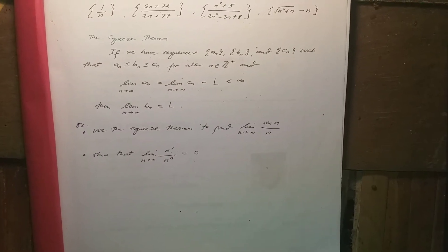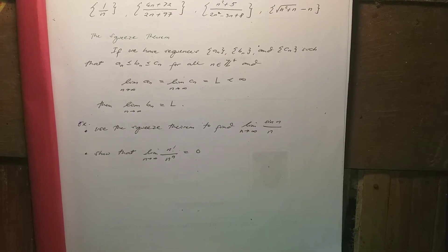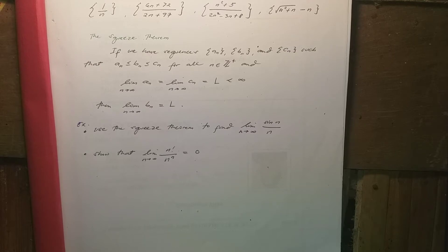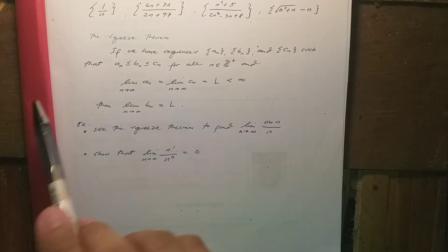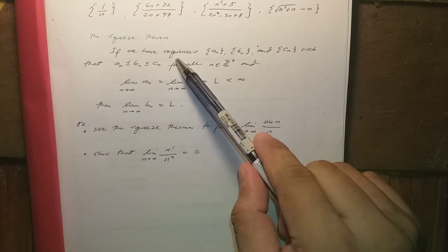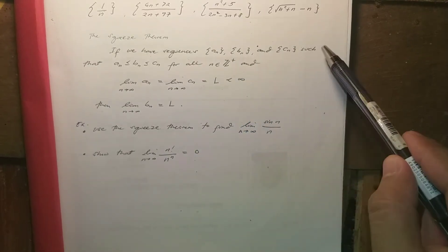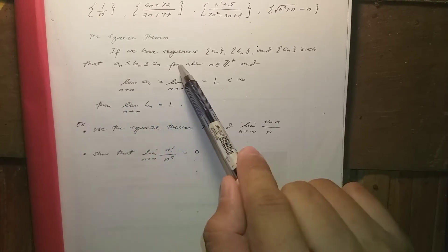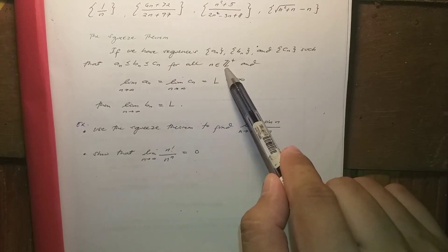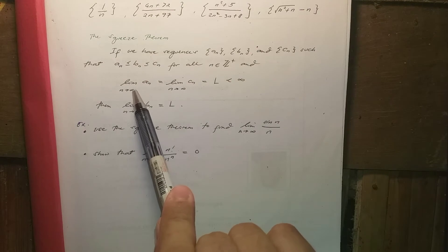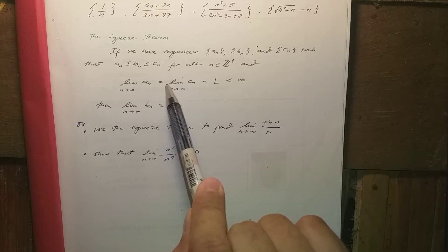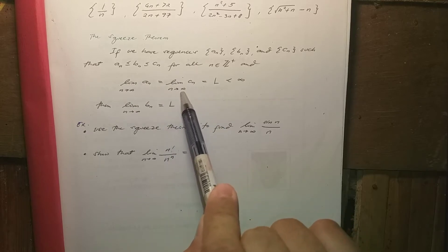Let us now proceed to the next topic: the Squeeze Theorem. This theorem has many uses in evaluating limits, especially at infinity. The theorem states: if we have sequences a_n, b_n, and c_n such that b_n is between a_n and c_n inclusive for all n in the positive integers, and if the limit of a_n as n approaches infinity equals the limit of c_n as n approaches infinity,